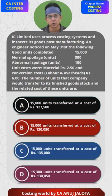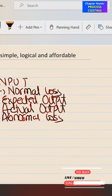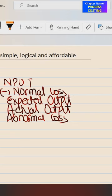You'll need your calculators. Let me write down the data. In this data I've written only five things: Input minus Normal Loss equals Expected Output, and compare it with Actual Output to arrive at Abnormal Loss.